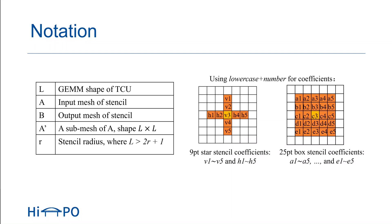I will now introduce how to compute the box stencil using the tensor core unit. In the same way, the computation of the box stencil can be represented as the weighted reduction of a series of horizontal or vertical slides. Since the approach using horizontal or vertical slides is the same, we present the box stencil as a series of horizontal slides in this paper as an example.